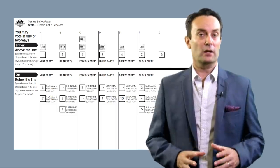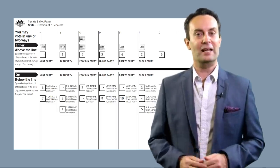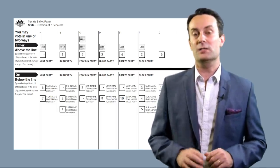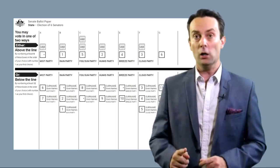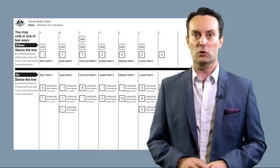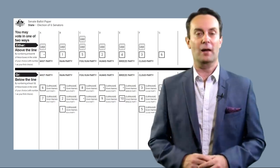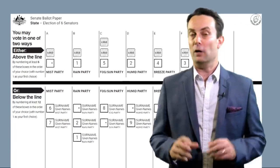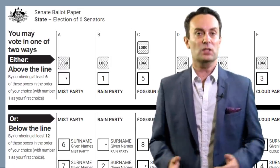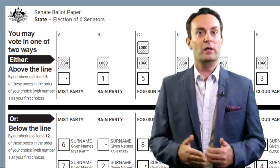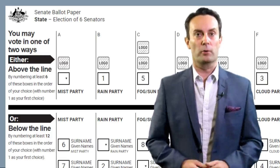To make your Senate ballot a valid vote, you must number at least six groups of candidates above the line or at least 12 individual candidates below the thick black line. If you vote above the line, the candidates in the groups you vote for will get your vote in the order they're already printed on the ballot.